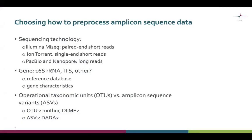When you receive a set of amplicon sequence data from a sequencing facility, there are several factors that need to be considered when deciding how to process the data. The first thing is the sequencing technology — do you have paired-end reads, single-end reads, or maybe long reads? The second point is the gene you have amplified and sequenced. The gene affects the reference database you need to use in the analysis, and some gene characteristics such as sequence variation among species can also affect the analysis.